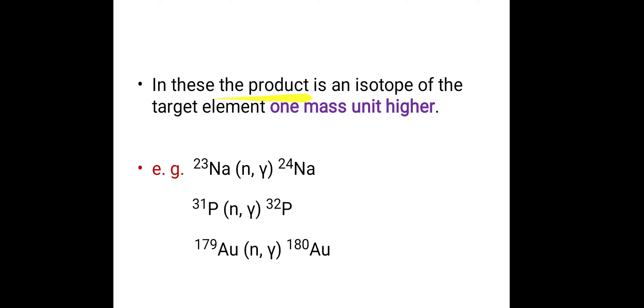In this the product is an isotope of the target element. Here sodium 24 is an isotope of sodium 23, one mass unit higher. Here there is 23 and here there is 24.